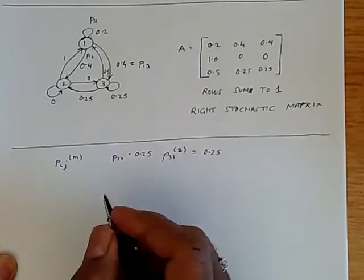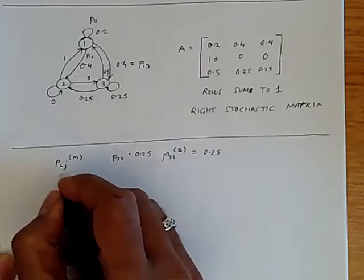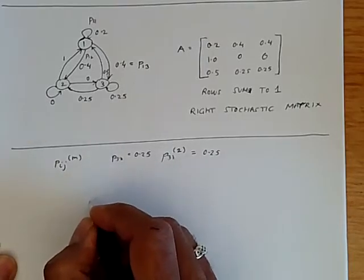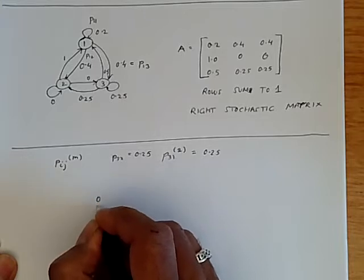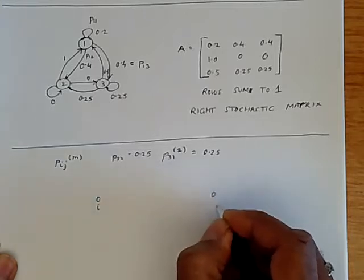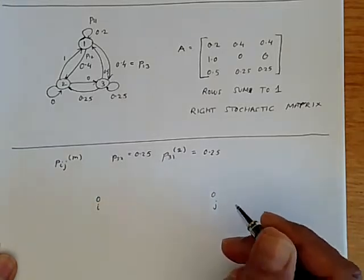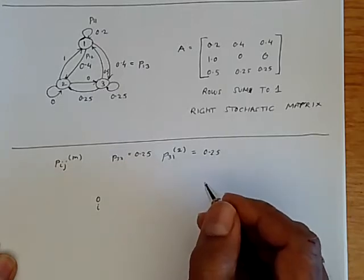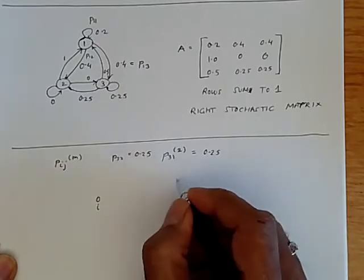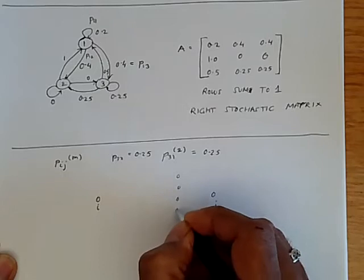Consider the probability of going from i to j in m steps like the following path. We're starting at state i, here's state j, and we have to get from i to j. But instead, what we can think of is this: we can have a bunch of intermediate states, all the possible intermediate states.